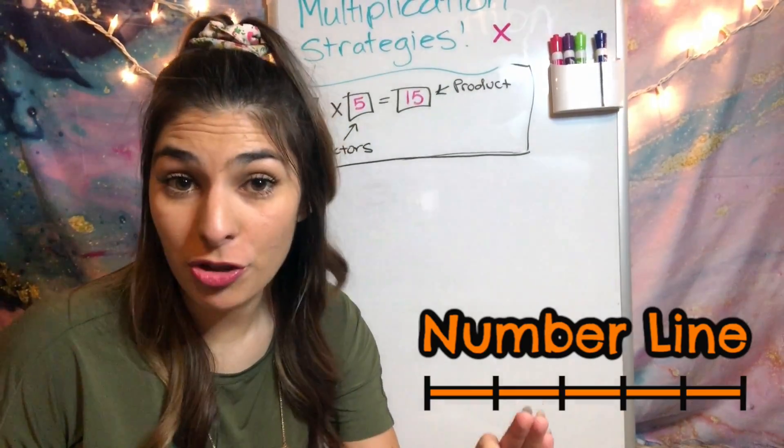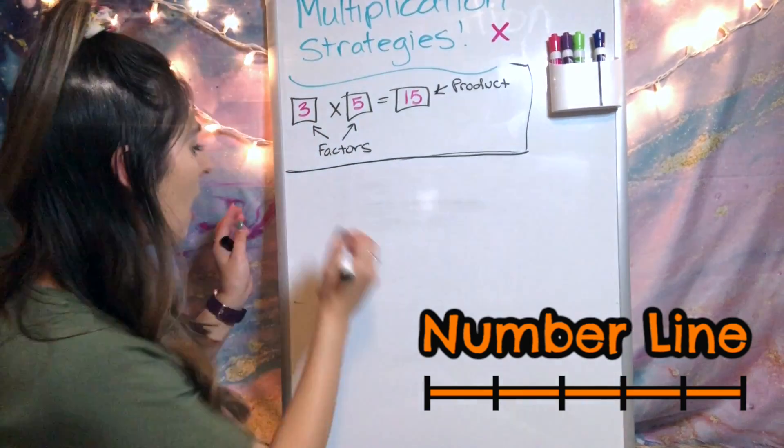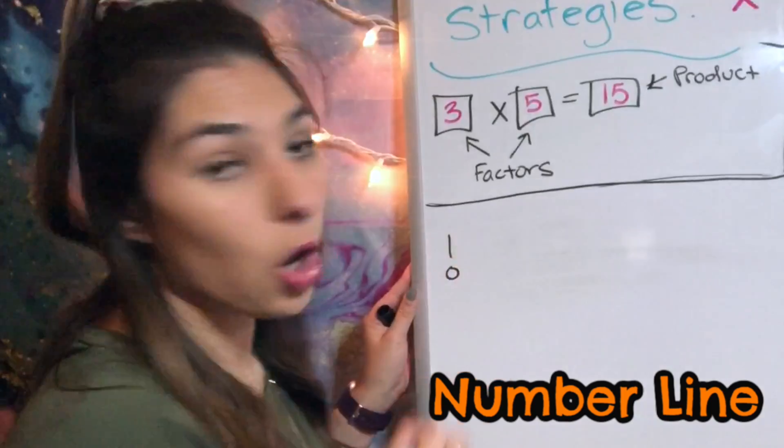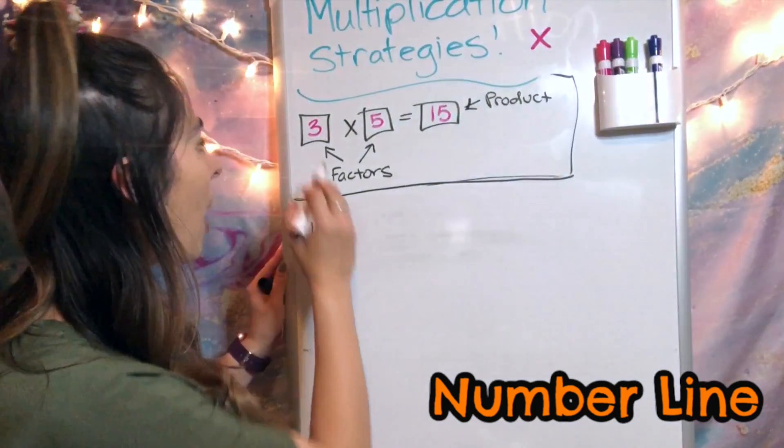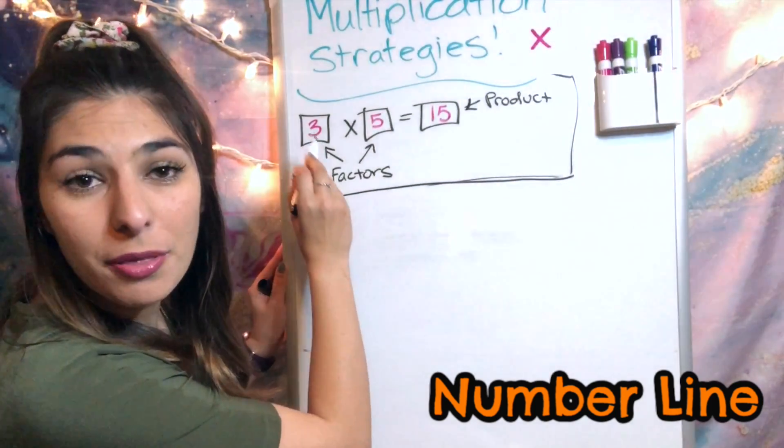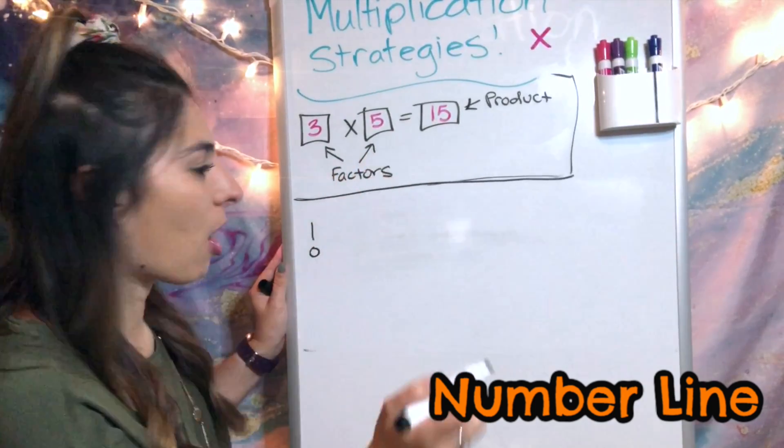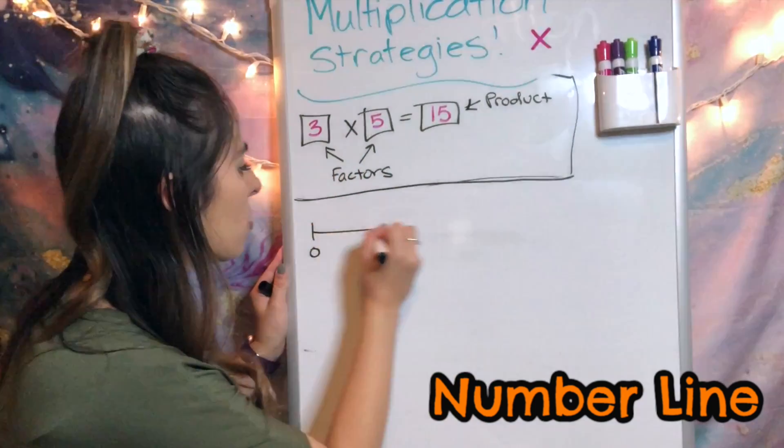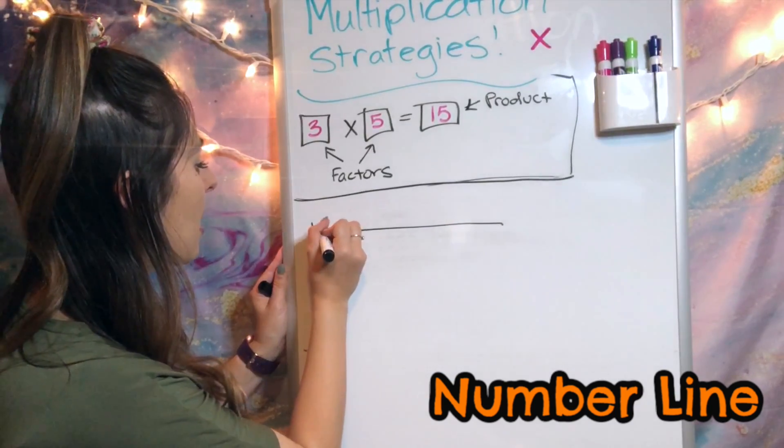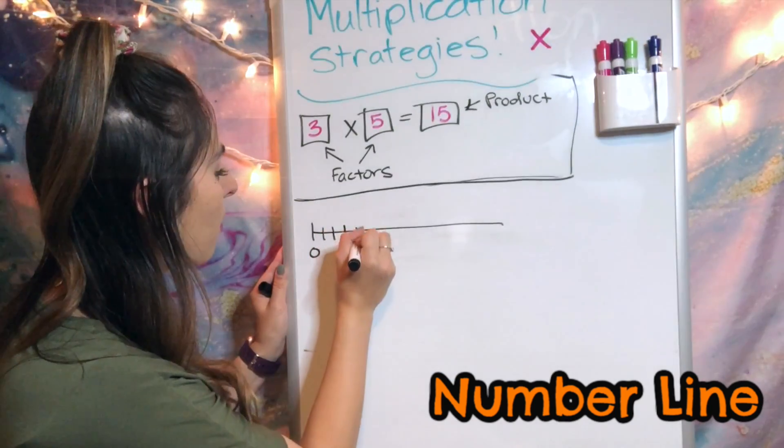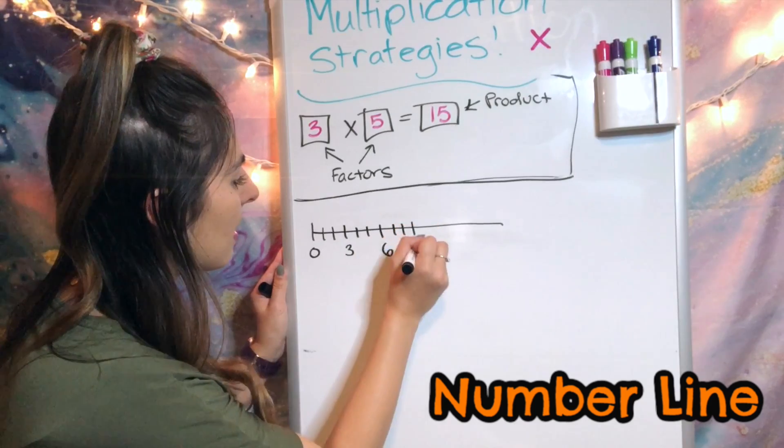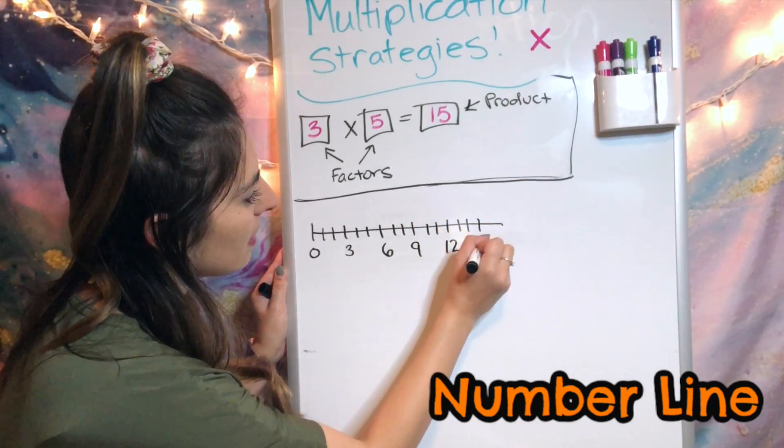The last common core strategy is a number line. So for our number line, I'm going to start at zero, always start at zero. Then I'm going to count by threes. I'm going to do three little hops for every one big hop, which we're going for five big hops here. So let's draw a line. I'm going to say 1, 2, 3, 4, 5, 6, 7, 8, 9, 10, 11, 12, 13, 14, 15.